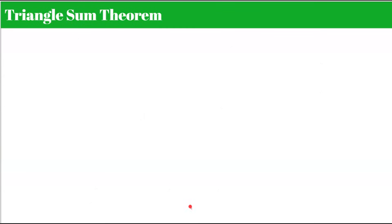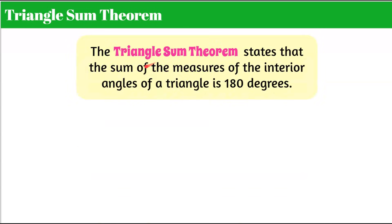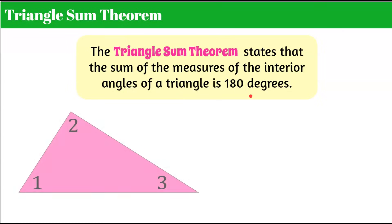Triangle sum theorem. This theorem states that the sum of the measures of the interior angles of a triangle is 180 degrees. Remember that the prefix 'tri' means three, so any triangle is going to have three interior angles. If it doesn't have three interior angles it's not a triangle — it can't have less and it can't have more.